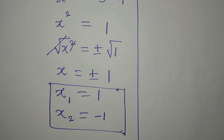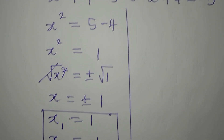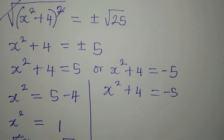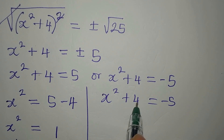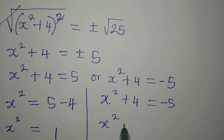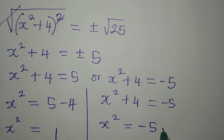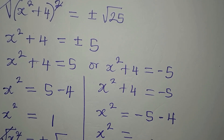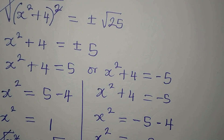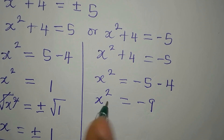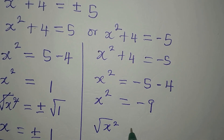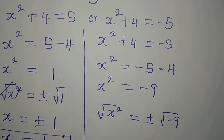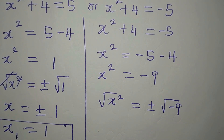Now let's go to the other equation we left out: x² + 4 = -5. The 4 moves to the other side, giving x² = -5 - 4, meaning x² = -9. To remove the square we take the square root, giving us plus or minus the square root of -9.